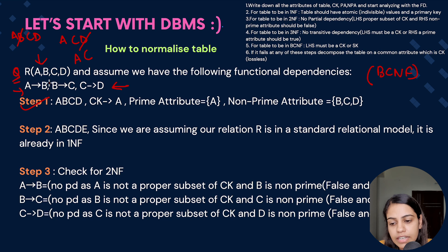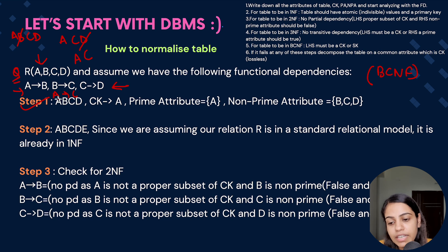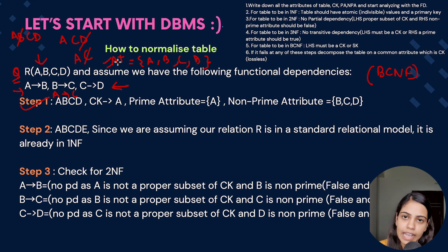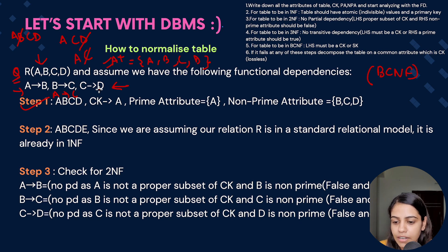From here we can see that A determines B and B determines C, so by transitivity A also determines C. Since both A and C are present, we discard C, leaving just A. Taking the closure of A: A gives B, B gives C, C gives D. So A is a candidate key. We also verify that A is not present on the right-hand side of any functional dependency — it is not — confirming that A is the candidate key.